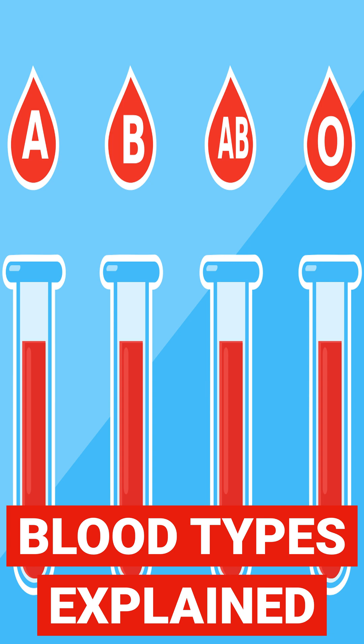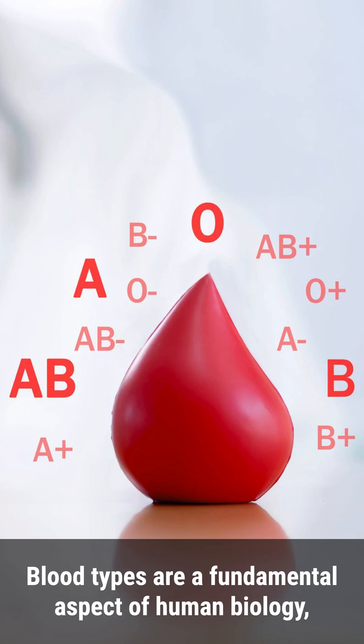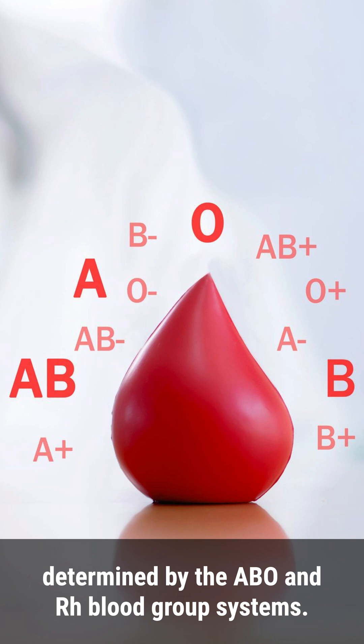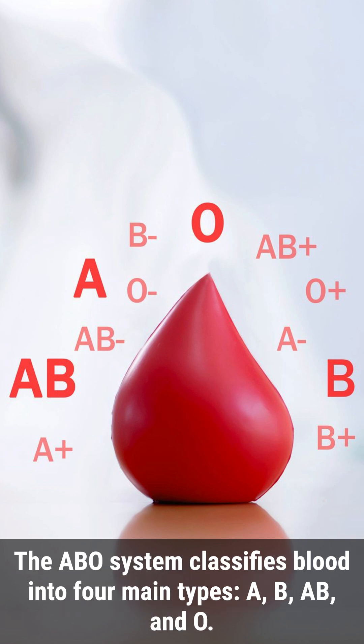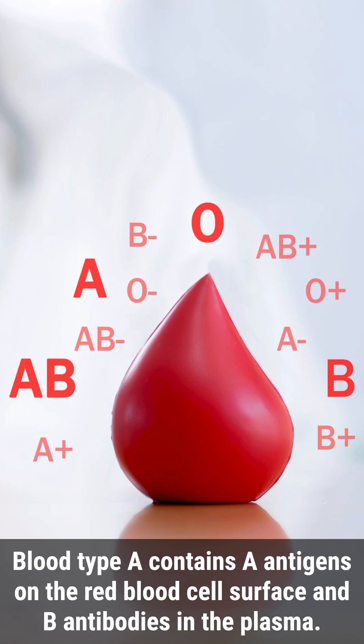Blood types are a fundamental aspect of human biology, determined by the ABO and Rh blood group systems. The ABO system classifies blood into four main types: A, B, AB, and O.